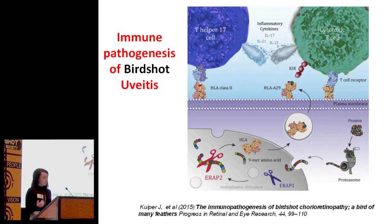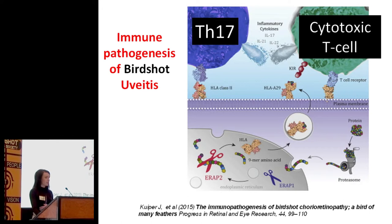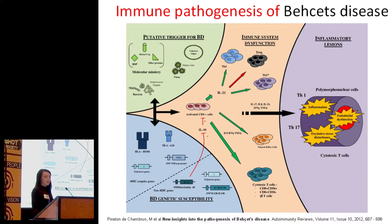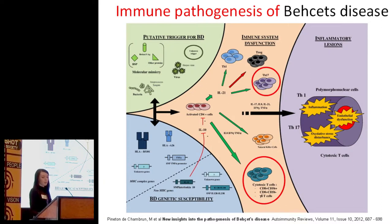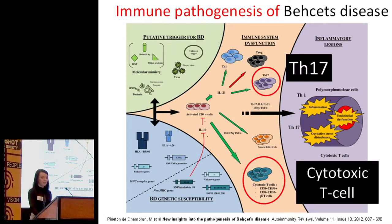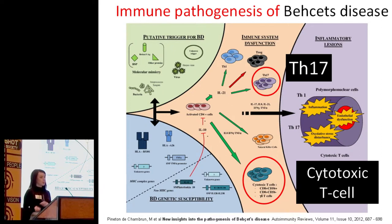If you look at birdshot uveitis, for example, there are different cell types involved, but predominantly the Th17s and cytotoxic T-cells have been identified as driving disease. And if you look at another inflammatory condition known as Bechet's disease, you can also see that although there are many different cell types involved, the Th17s and the cytotoxic T-cells are also prevalent in this disease. So if you were going to distinguish between these diseases at the immune cell level, it would be very difficult.